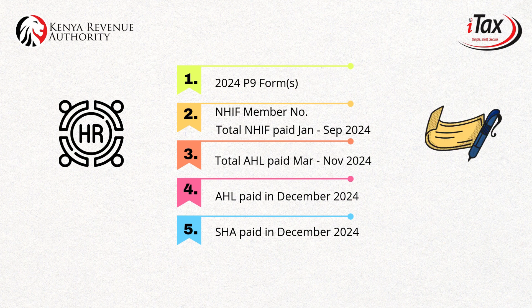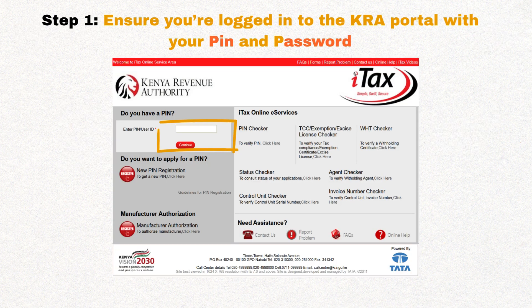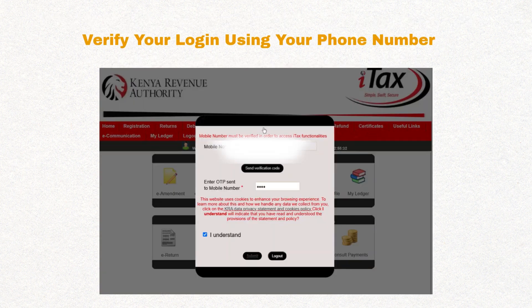If you don't have this data with you right now, please continue watching to figure out how these pieces of information fit together this year. Step one: ensure you're logged into the KRA portal with your PIN and password. This year, iTax needs to verify your phone number, so input the correct phone number and the verification code from your phone to continue.